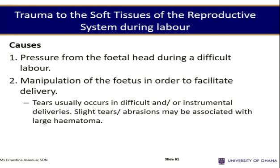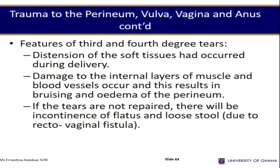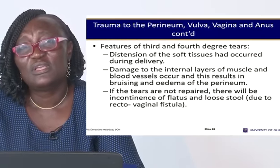Tears during delivery can result from the fetal head or from manipulations during delivery. There are four degrees of tears: first, second, third, and fourth degree — named according to the extent of damage. The more severe the tear, the higher the degree. A fourth-degree tear involves the anal sphincter and sometimes the rectal mucosa. First-degree tears may be managed by the midwife; third and fourth degree tears involve deep tissue, muscles, blood vessels, bruising, and edema of the perineum.